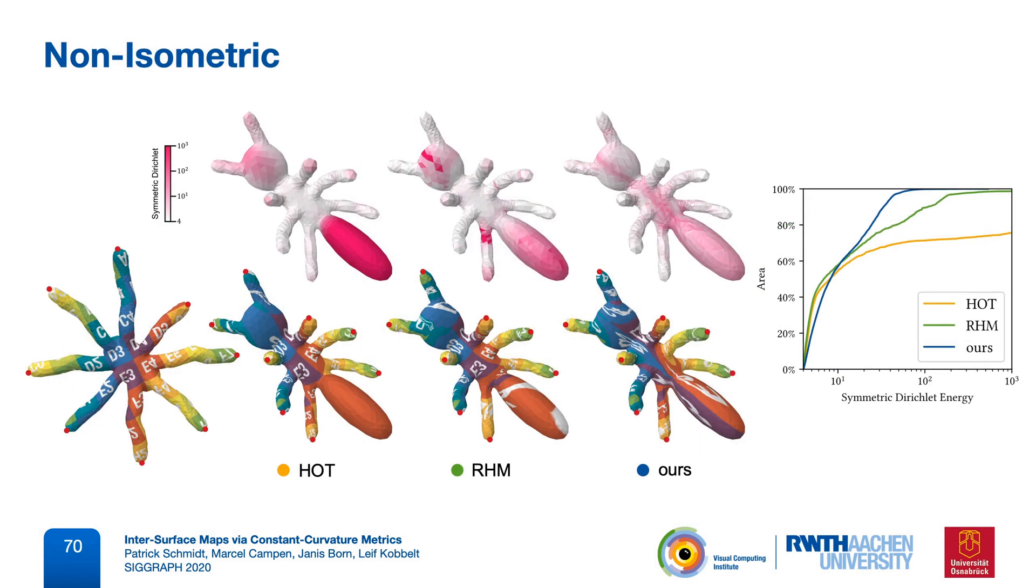Between more non-isometric shapes, we observe that both other algorithms tend to concentrate distortion in some areas, while our method distributes the inevitable distortion more evenly, leading to a low maximum distortion value.